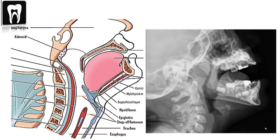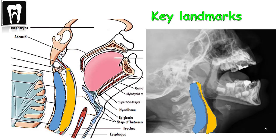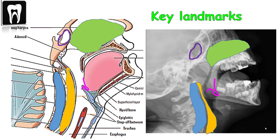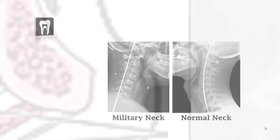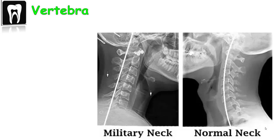This is what comes out on the X-ray. Look at the key landmarks that can be helpful: the cervical spine, the prevertebral shadow, the folds, the nasal cavity, the sphenoid sinus, and the C-shaped shadow which is the adenoid.